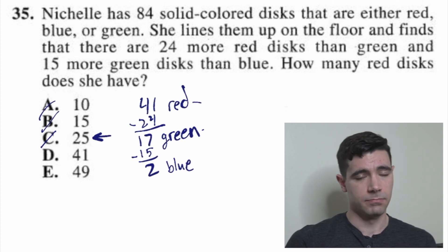41 plus 17 equals 58 plus 2 blue. Well, that would be 60, which is a fine number of disks to have, but it's not 84. So the answer must be E.